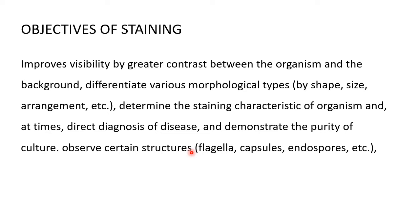We try to differentiate bacteria morphologically based on size, shape, and arrangement. Staining also helps differentiate bacteria into two groups — for example, in Gram staining we differentiate as Gram positive and Gram negative. For purity of culture, if you perform Gram staining and find two colors — pink and purple — that means the culture is contaminated. If you find only one color, say pink, that means you have a pure Gram-negative culture.